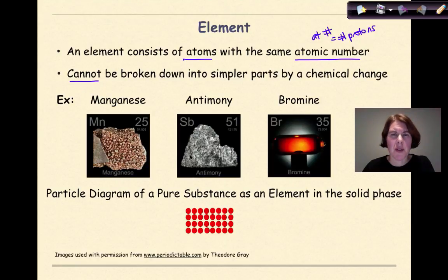So here we have some examples of different types of elements. We have manganese here, antimony, and liquid bromine. This would be a particle diagram of pure substance as an element in the solid phase. We can see how the atoms are all closely placed together in some type of uniform pattern. So this again is showing a particle diagram of an element in the solid phase.